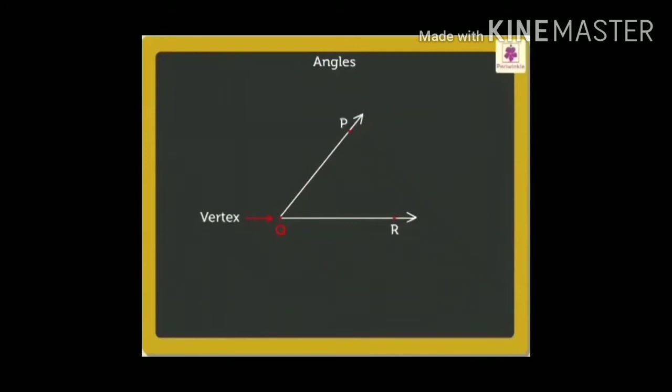The point where they are forming an angle is point Q and this is also known as vertex. This can be read as angle PQR or angle RQP or only angle Q. Here in this diagram you can see when two rays,